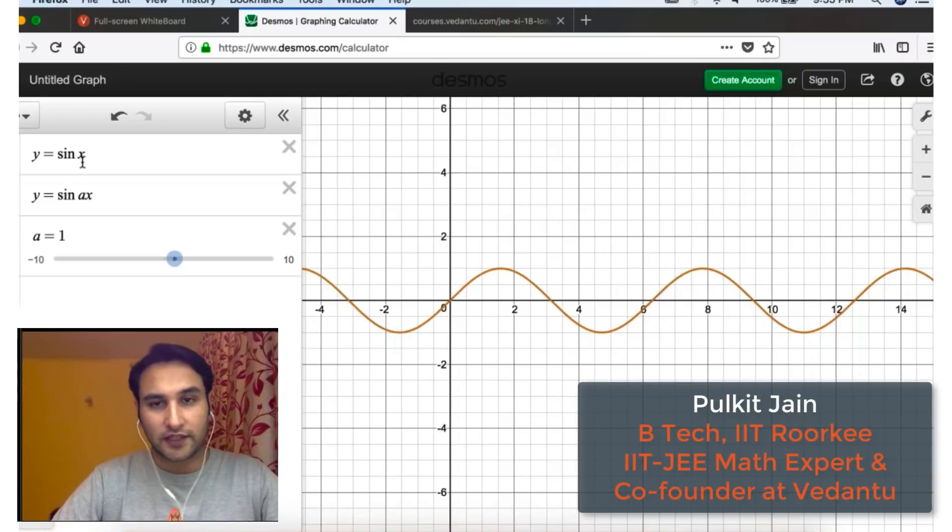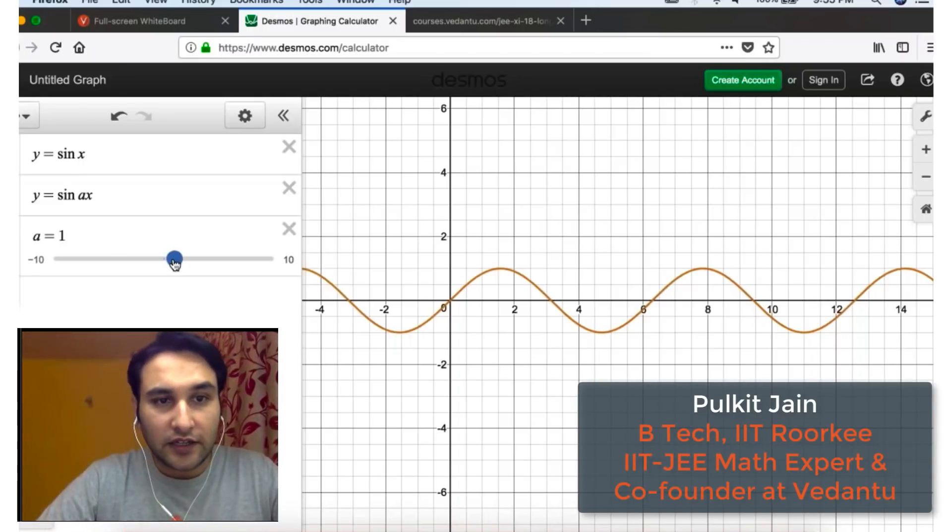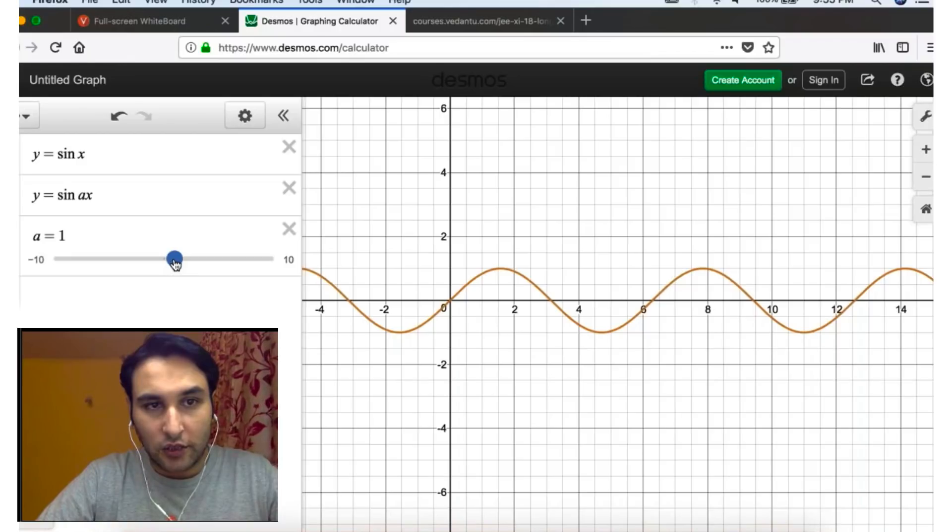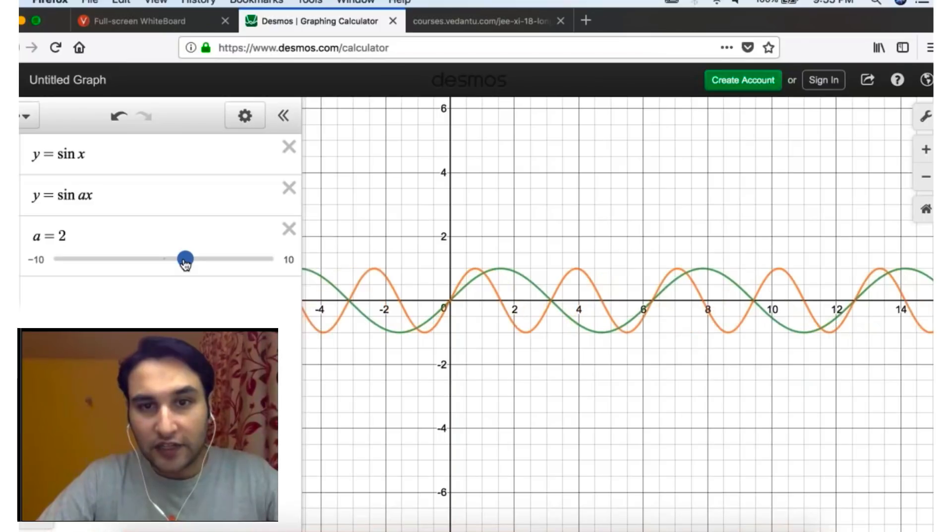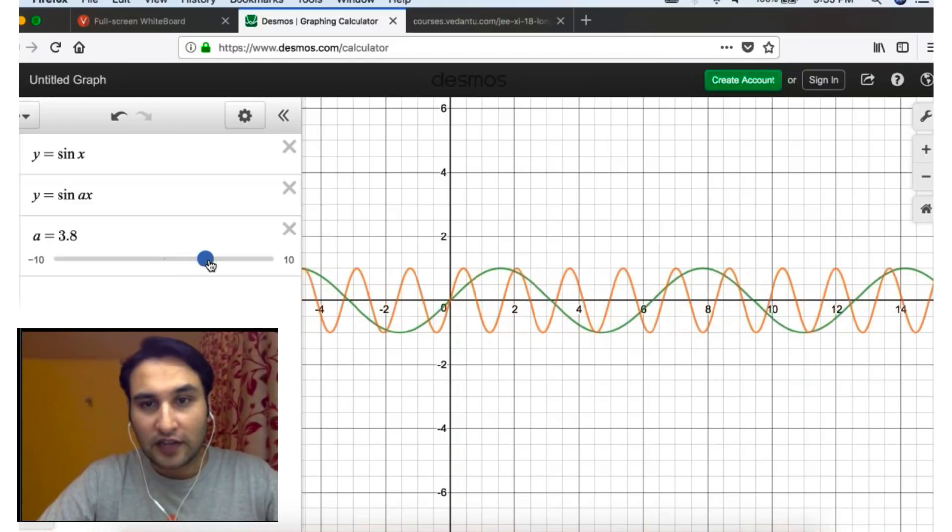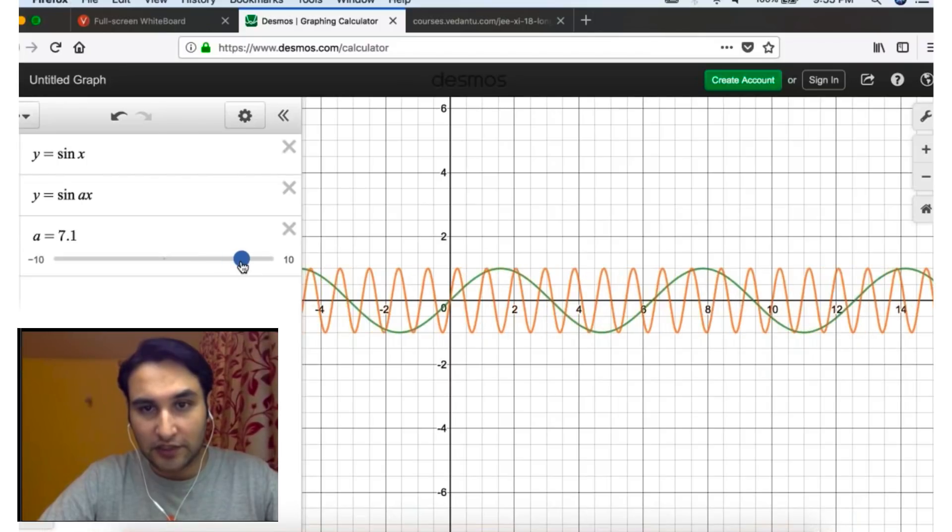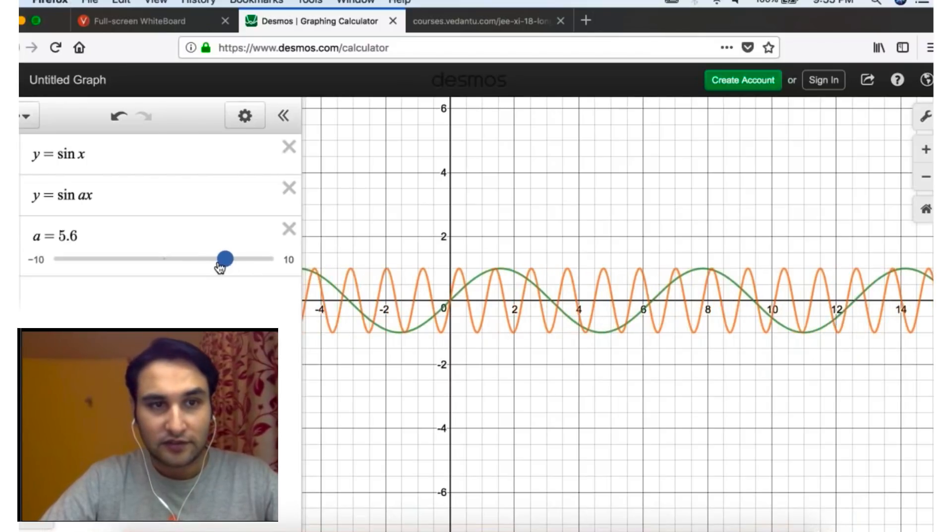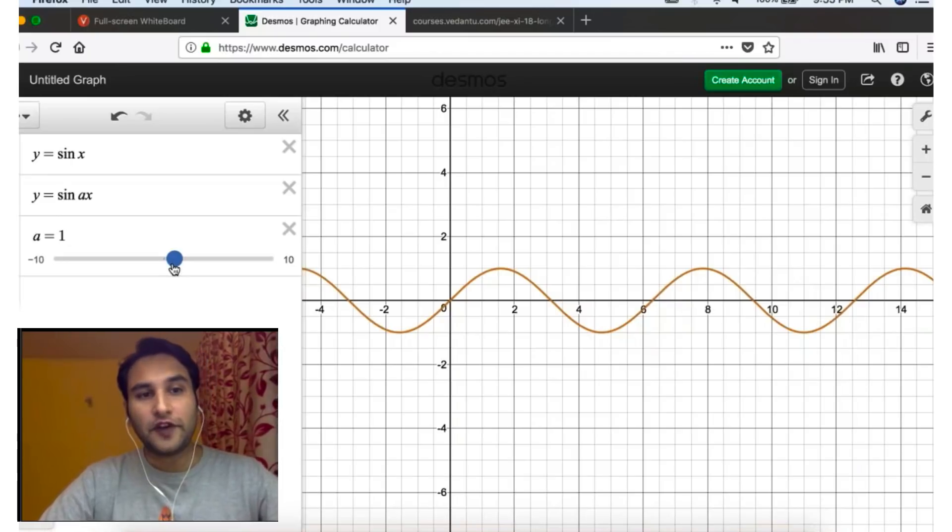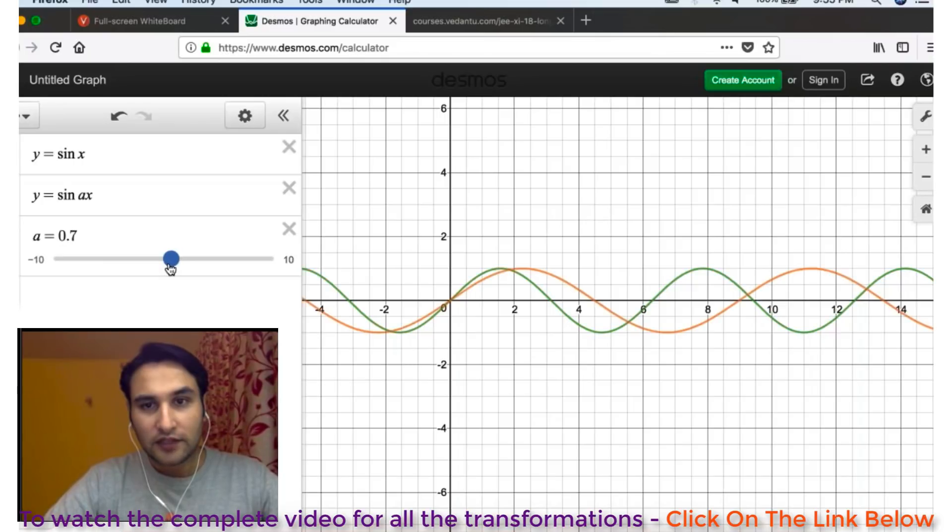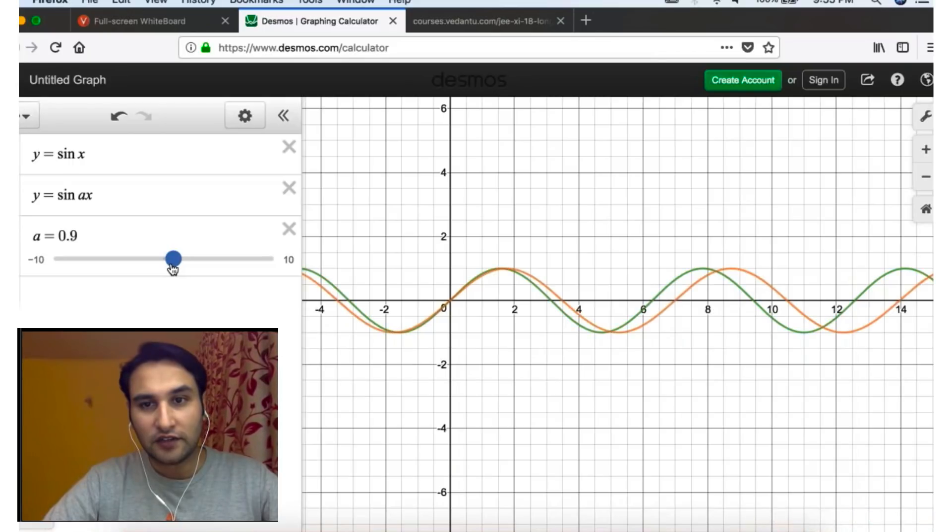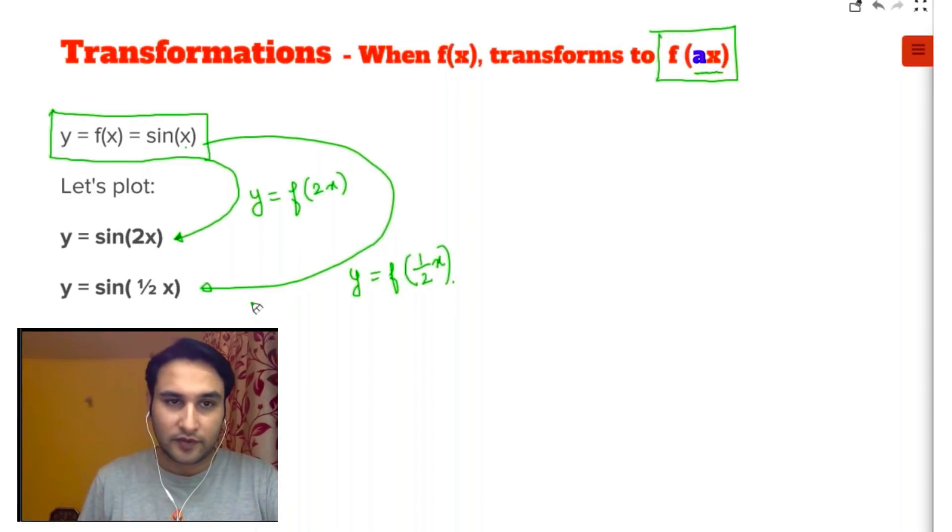Okay, so when a is one, the graph is of sine x, which all of you can see. If I increase the 'a', you can see the graph is getting compressed. The graph is getting compressed along the x-axis. The graph is getting compressed along the x-axis. Check this area together. Now if I decrease the 'a', see what will happen: the graph is getting stretched. The graph is getting stretched. See, the graph is getting stretched along the x-axis.